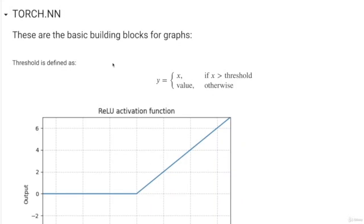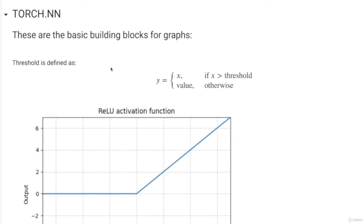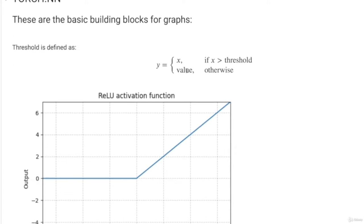Let us look at some functions of Torch.nn, which provides the basic building blocks for computation graphs. Let us look at two simple non-linear activation functions. The first is ReLU: ReLU(x) = max(x, 0). As long as x is greater than 0, ReLU(x) equals x, and if x is less than or equal to 0, ReLU(x) equals 0. In Torch, import torch.nn as nn and define nn.ReLU as your non-linear activation.